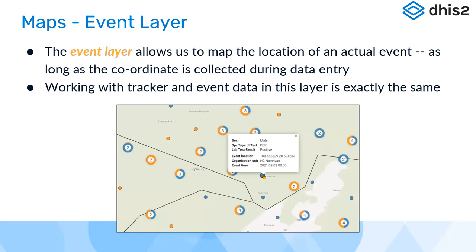The first layer is the event layer, which allows us to map the locations of an actual event, as long as coordinates are collected during data entry. Working with tracker and event data in this layer is exactly the same — both tracker and event data work in the same way within the event layer.